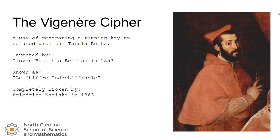The Vigenère Cipher is a way of generating that running key that we've seen already with the tabula recta. It was actually invented by someone named Giovanni Battista Bellasso in 1553, and it was known for a very long time as Le Chiffre Indéchiffrable — French for the unbreakable cipher. It was very unbreakable for so long; you can see it was invented in 1553 and it wasn't broken until 1863 by Friedrich Kasisky.